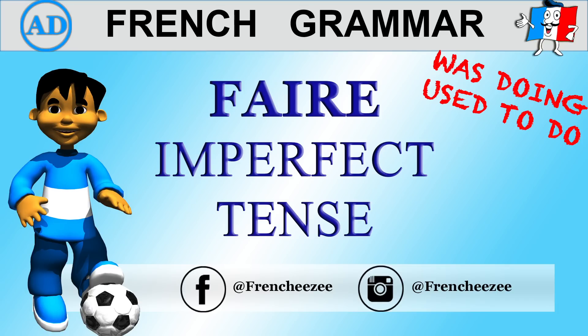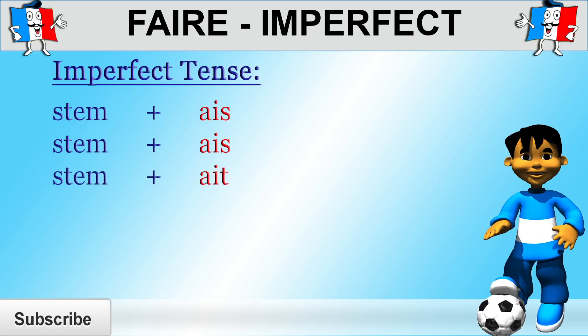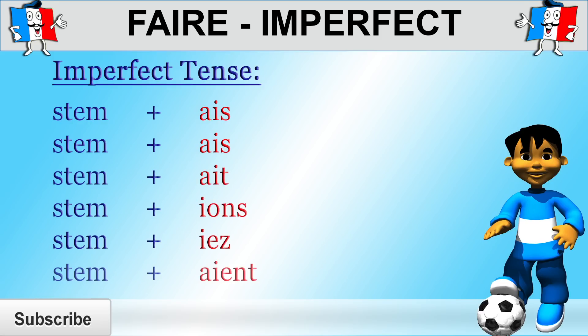Le verbe faire à l'imparfait. So first things first, how do we actually form the imperfect? To form the imperfect, you first need to work out what the stem is. To get the stem, you need to remove the ONS ending from the nous form of the present tense of the verb. Once you've got the stem, you then add the appropriate imperfect tense ending, depending on who or what performed the action.